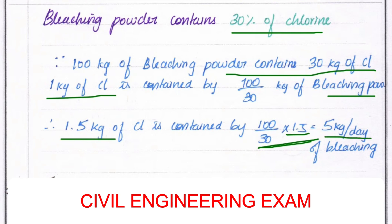This gives us 5 kg per day. So 5 kg of bleaching powder is required to treat 3×10⁶ liters per day. In summary, 1.5 kg of Cl₂ is required and 5 kg per day of bleaching powder is required. We will see you again in the next video. Thank you.